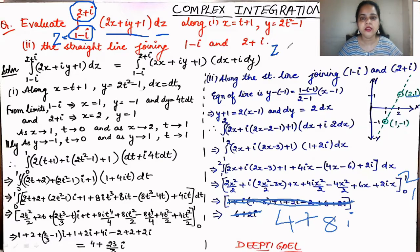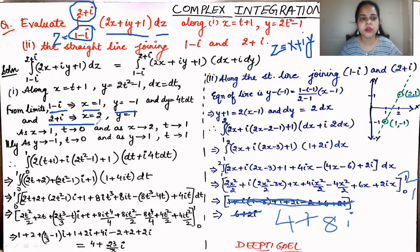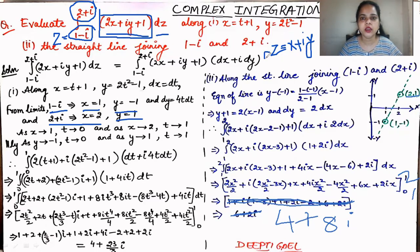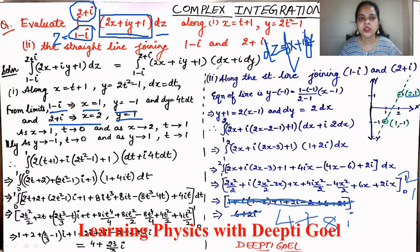Since z = x + iy, where x is the real part and y is the imaginary part, the limits of the x and y coordinates are: for 1 - i, x = 1 and y = -1; for 2 + i, x = 2 and y = 1. The function is 2x + iy + 1, and since dz = dx + i·dy, we write dz as dx + i·dy.